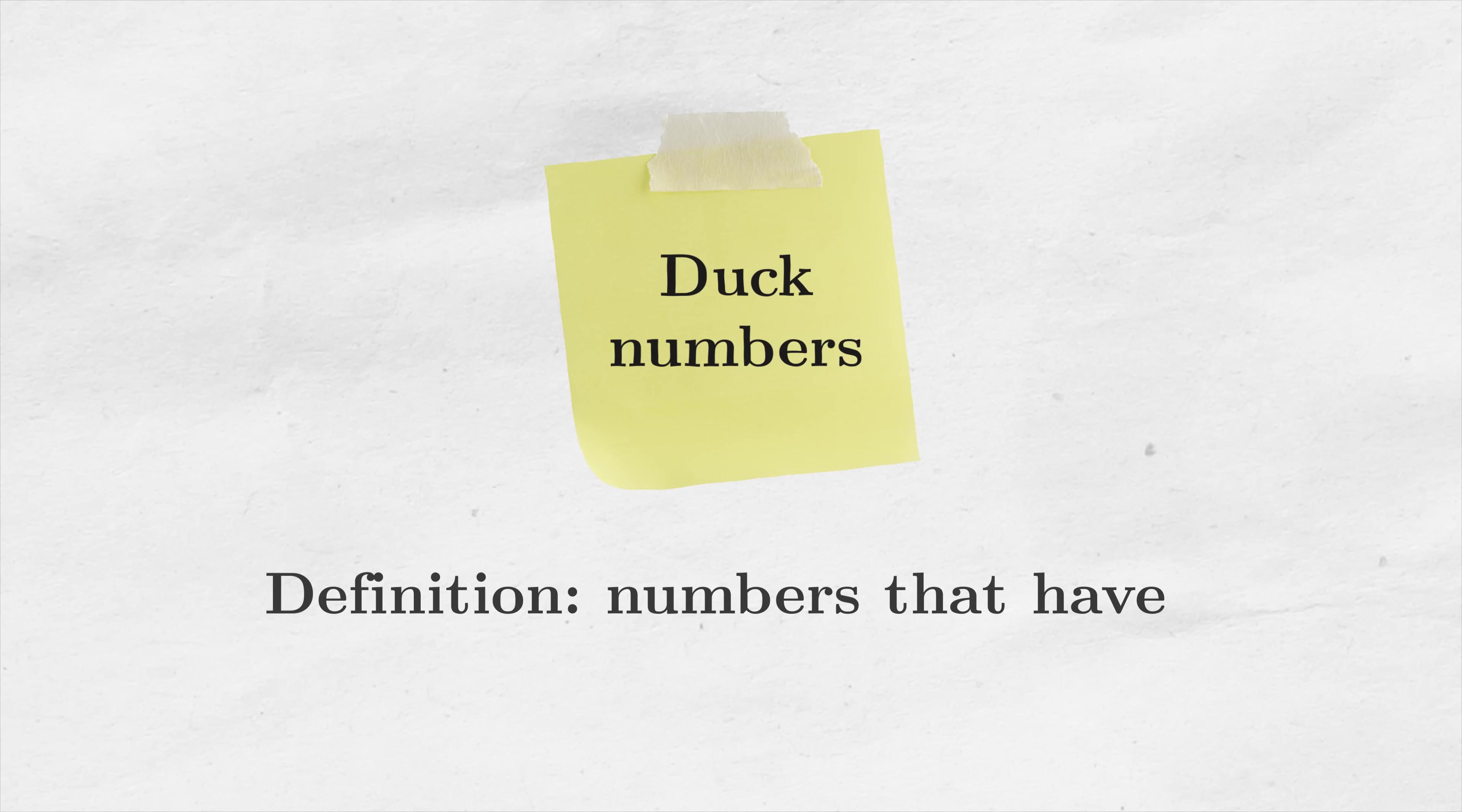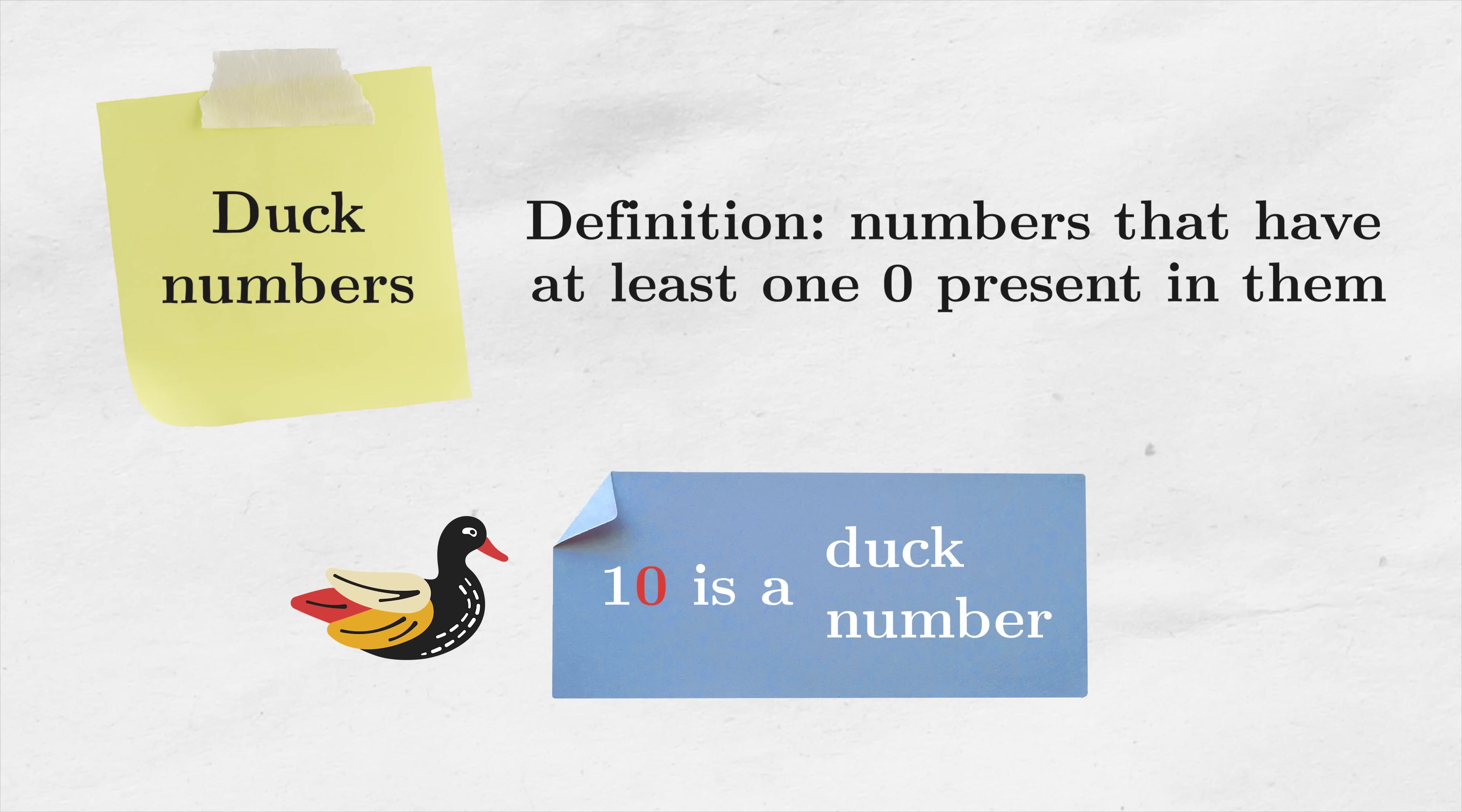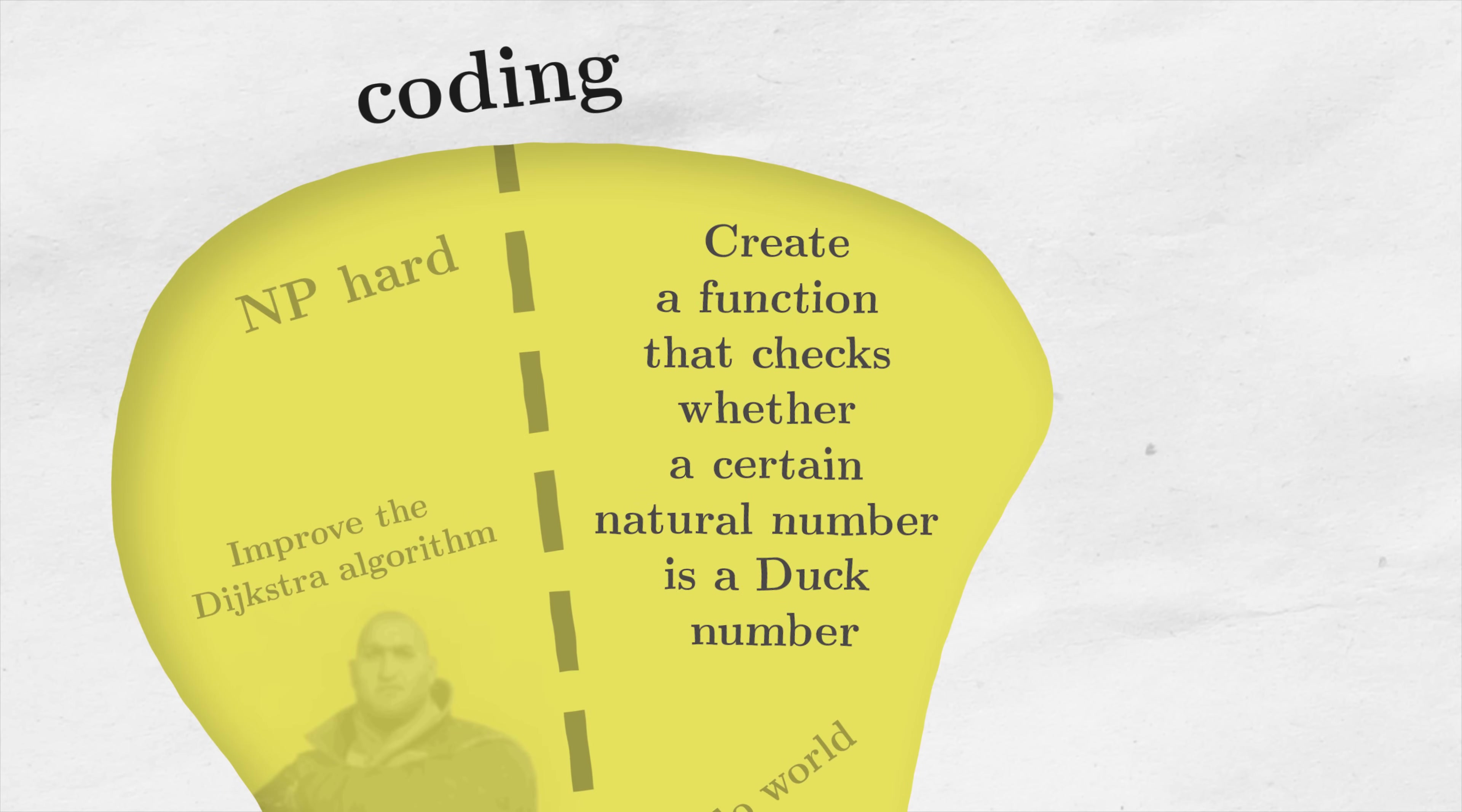These are defined as numbers that have at least one zero present in them, for zero is the unit digit of 10. On the more basic, beginner-friendly side of coding there is this exercise to create a function that checks whether a certain natural number is a duck number.